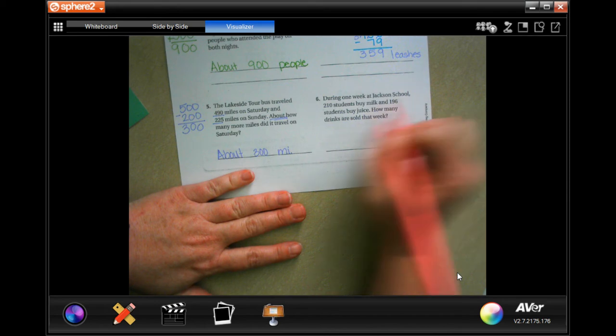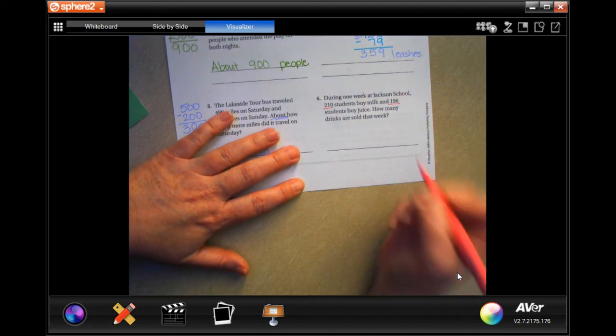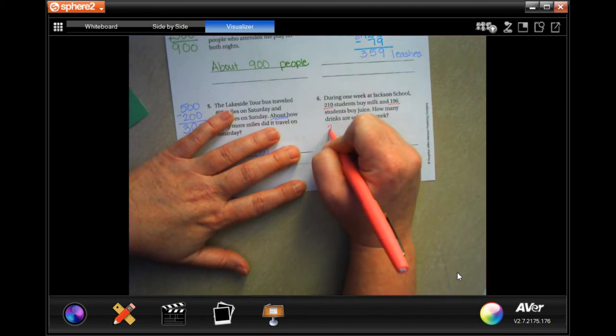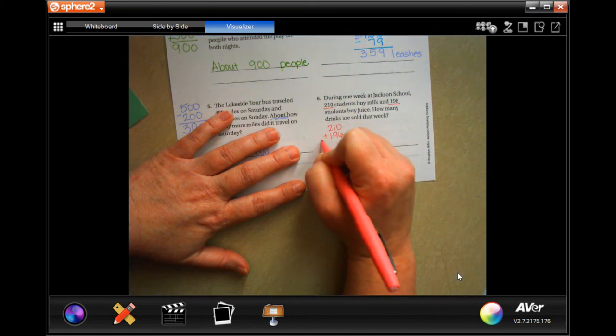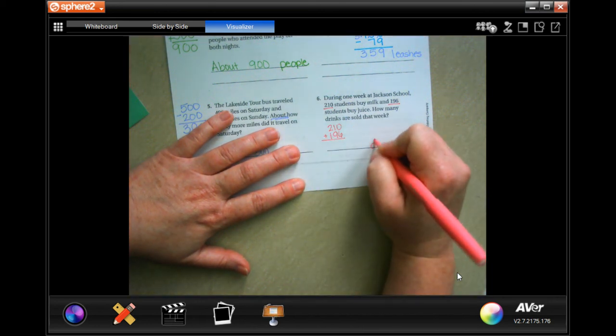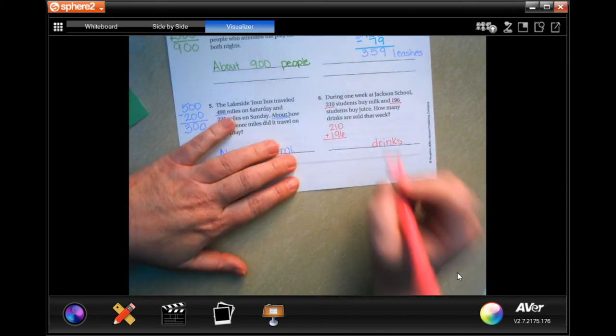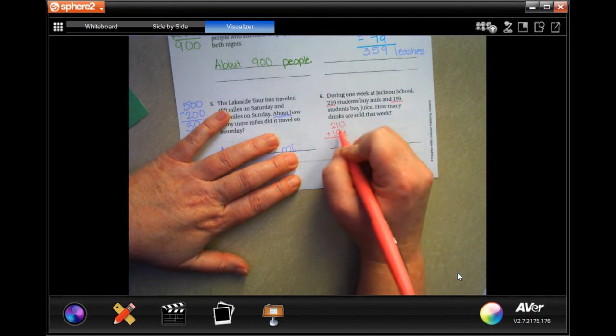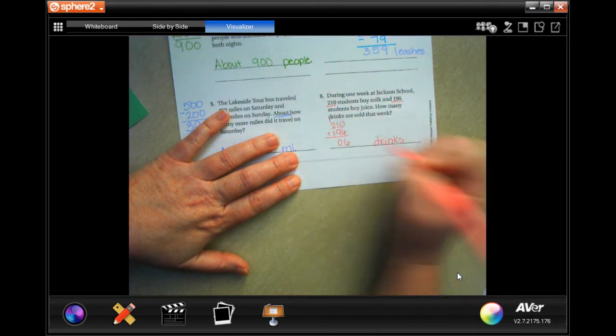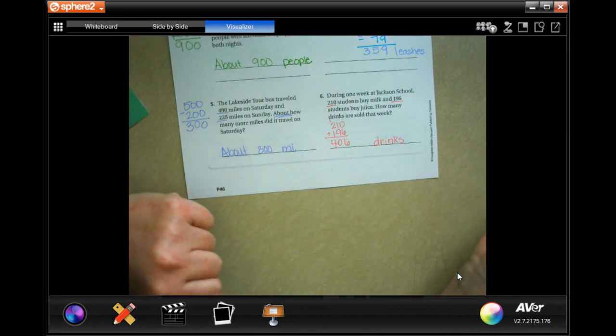During one week at Jackson School, 210 students bought milk and 196 students bought juice. How many drinks were sold that week? So we're going to add 210 and 196. And whatever it is, it's going to be drinks. So 0 plus 6, 6. 1 plus 9 is 10. Carry that 1. 1 plus 2 is 3. Plus 1 more is 4. So 406 drinks.